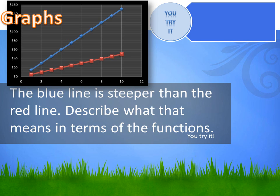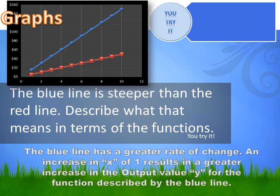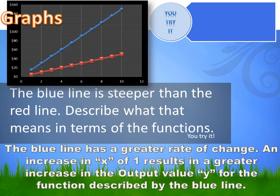The blue line is steeper than the red line — what does that mean in terms of the functions? They're both linear functions with a constant rate of change. But the blue line being steeper means it has a greater rate of change than the red line. An increase in X of 1 results in a greater increase in the output value Y for the function described by the blue line.